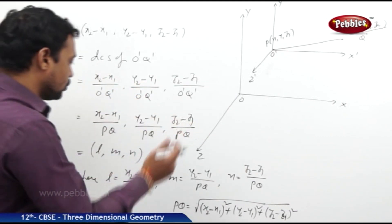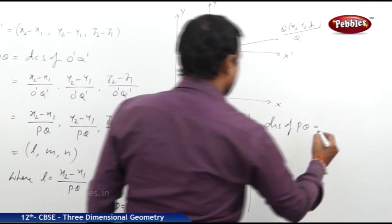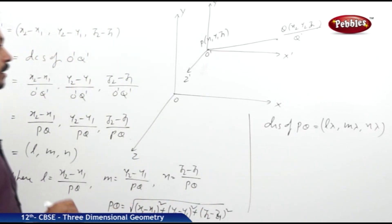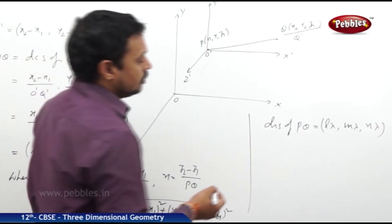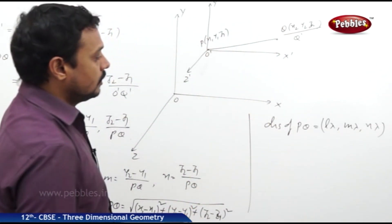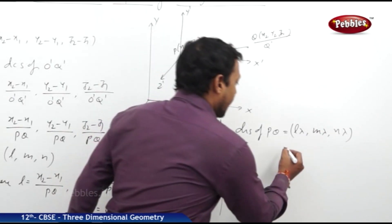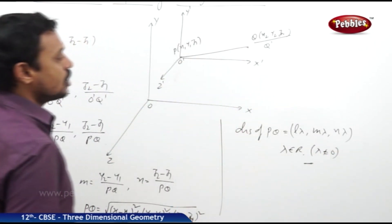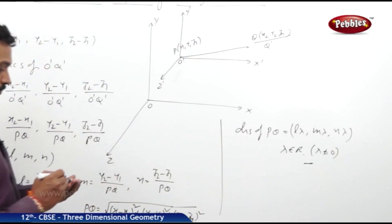The direction ratios of PQ are proportionate values of l, m, n — that is, lλ, mλ, nλ for any non-zero real number λ. So the proportionate values of l, m, n are the direction ratios of the line joining P and Q.